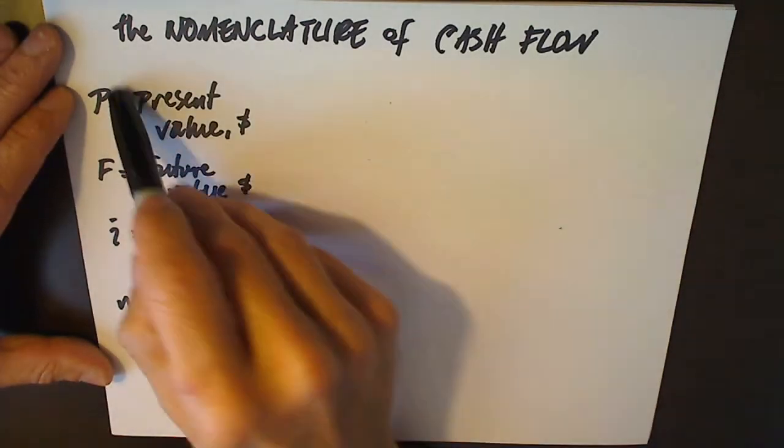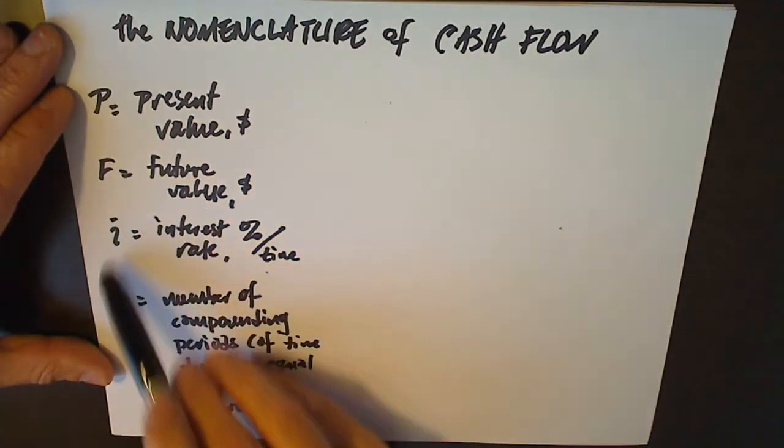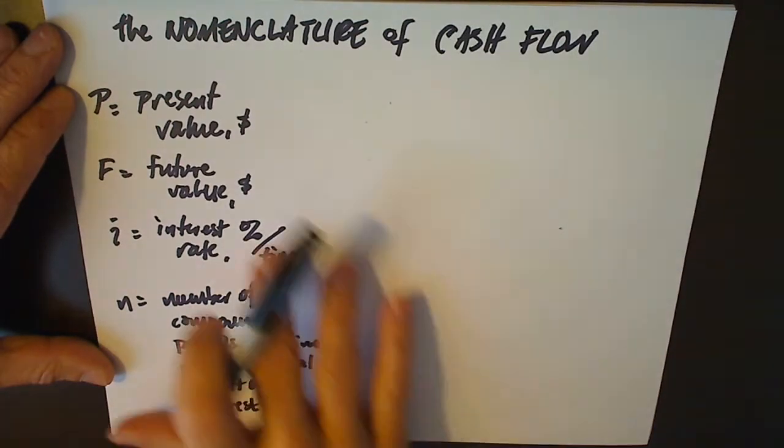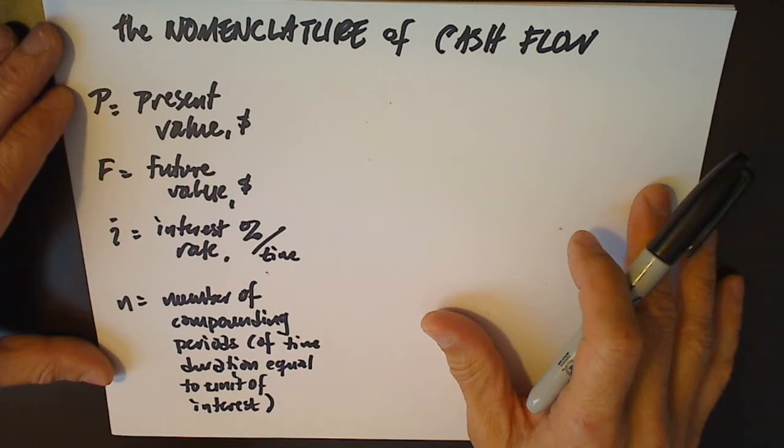In our last video, we reviewed P, F, I, and N, and we had to understand their meanings in relation to a cash flow diagram.